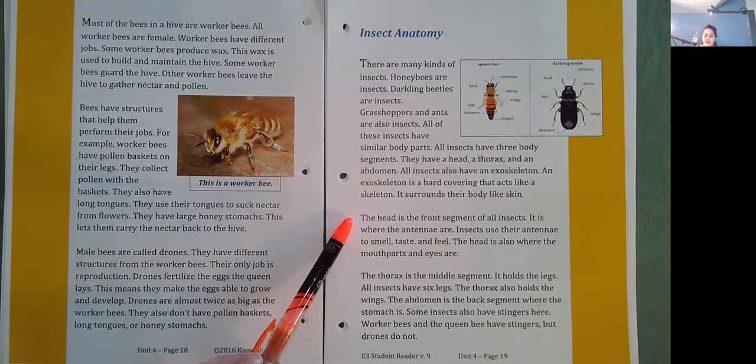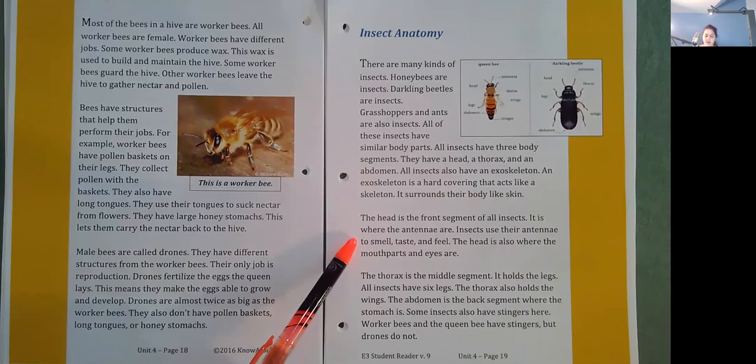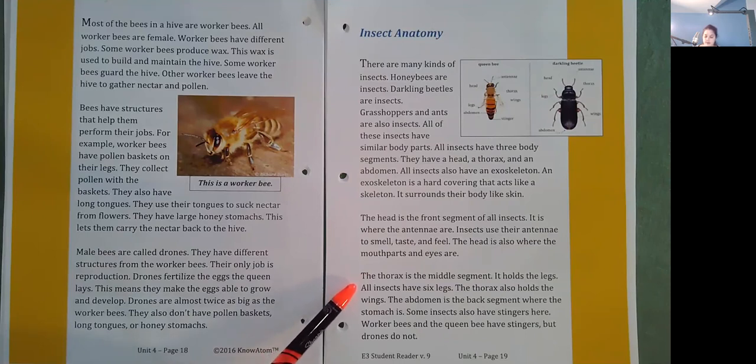The head is the front segment of all insects. It is where the antennae are. Insects use their antennae to smell, taste, and feel. The head is also where the mouth parts and eyes are. The thorax is the middle segment. It holds the legs. All insects have six legs. The thorax also holds the wings. The abdomen is the back segment where the stomach is. Some insects also have stingers here. Worker bees and the queen bee have stingers, but drones do not.